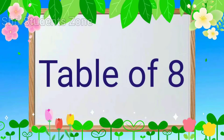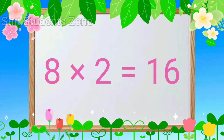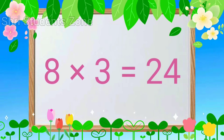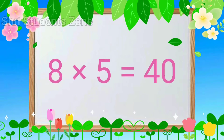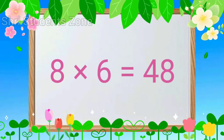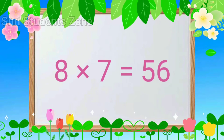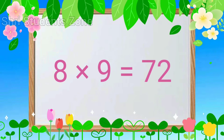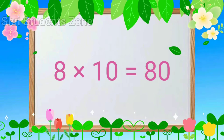Table of 8. 8 1s are 8, 8 2s are 16, 8 3s are 24, 8 4s are 32, 8 5s are 40, 8 6s are 48, 8 7s are 56, 8 8s are 64, 8 9s are 72, 8 10s are 80.